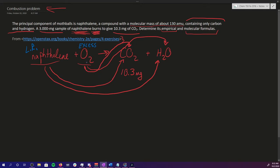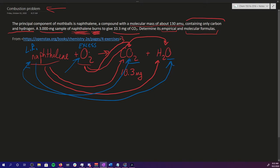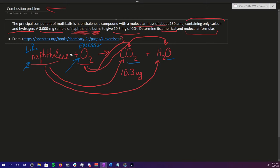The reason the limiting reactant and excess reagent distinction matters is that you always want to be hesitant about using oxygen to determine how much was actually used in producing the products. Even if the naphthalene had oxygen in it — it doesn't, but if it did — it could contribute to the oxygen in the CO₂ or the water, and so could our excess oxygen. Because there's potentially more than one source of oxygen, we're not going to solve for oxygen.